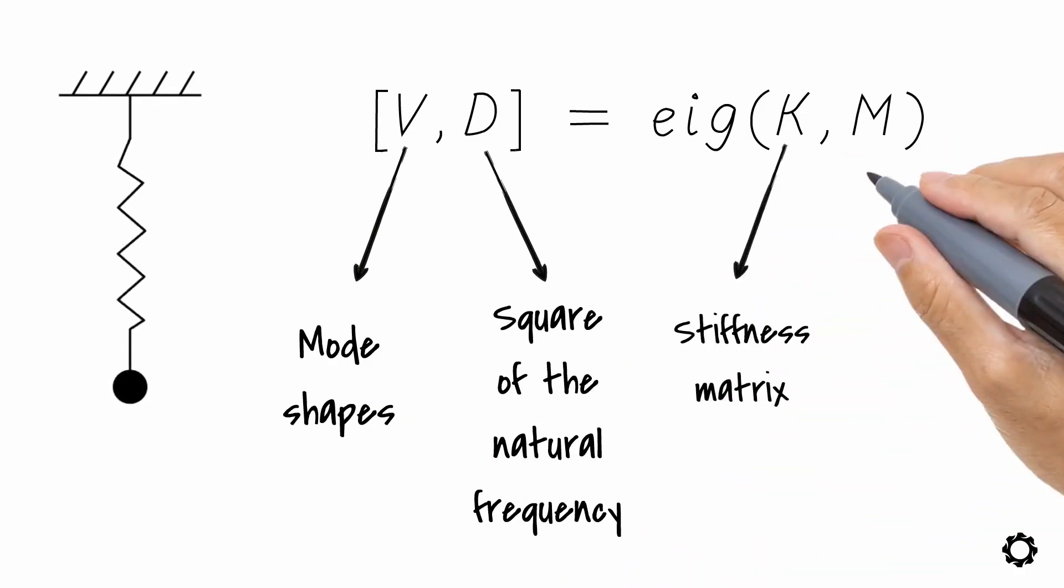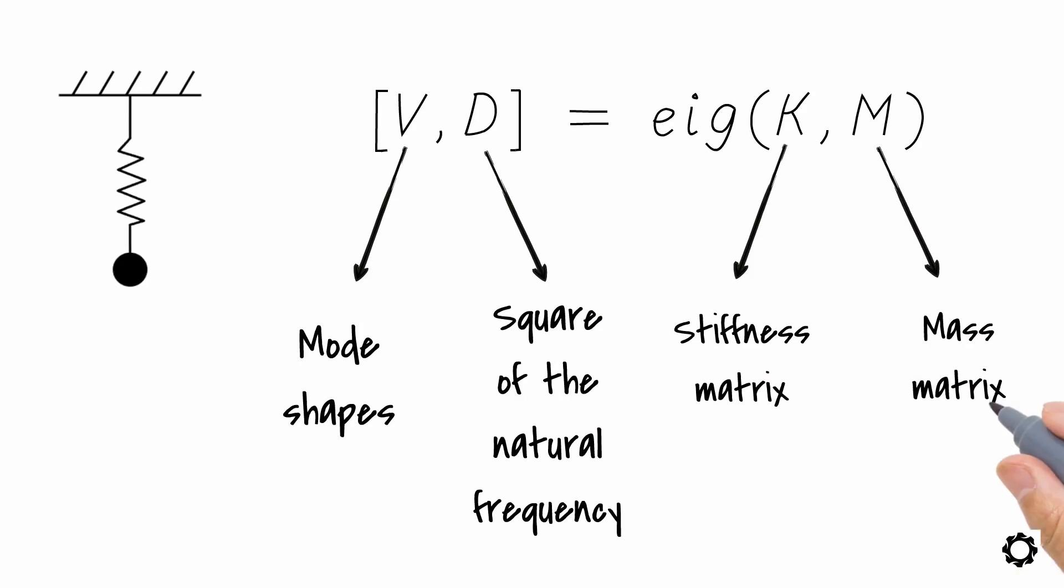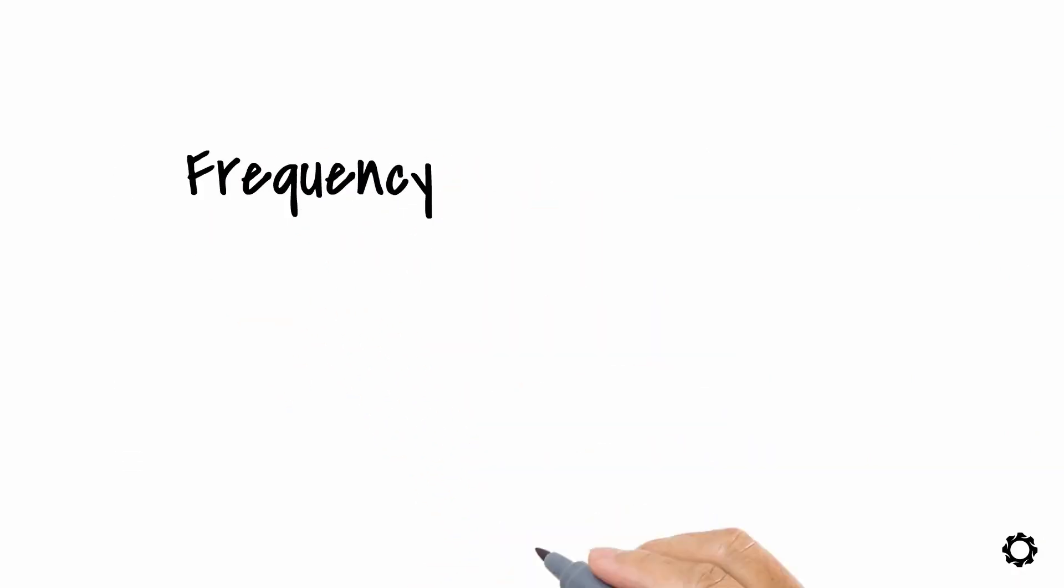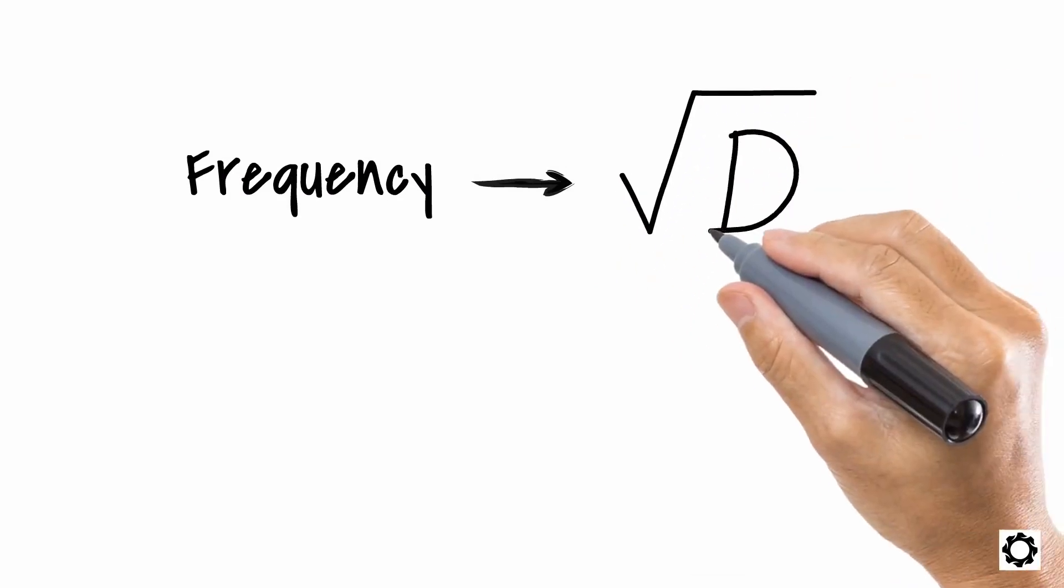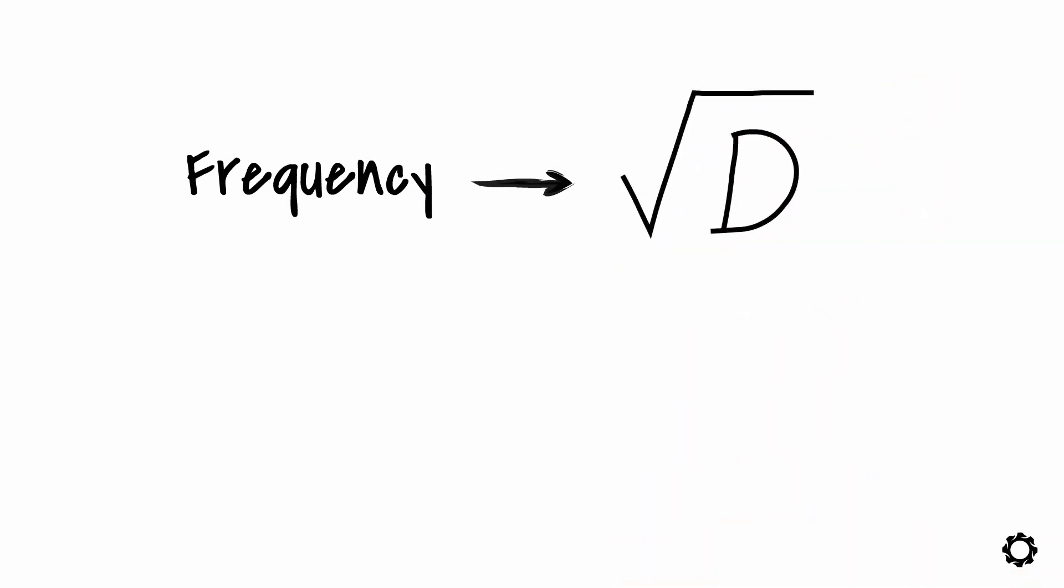K, the stiffness matrix of the systems, and finally M, the mass matrix. Finally, as we wanted to know the frequency, we just need to take the square root of the given result in D. And that's it. Pretty easy, right?